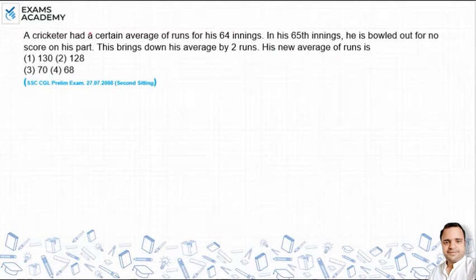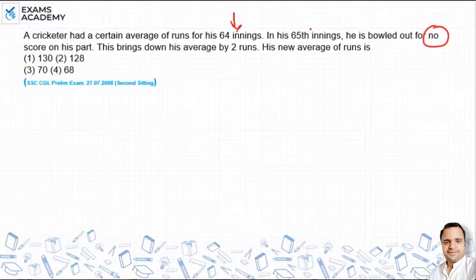Let's understand the question. A cricketer has 64 innings with a certain average. In his 65th inning, he is bowled out for no run — no run has been made. The average of 64 innings has decreased by 2 runs. We are asked about the new average.